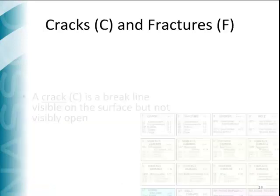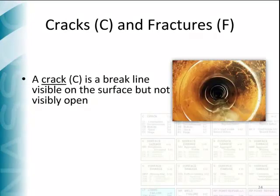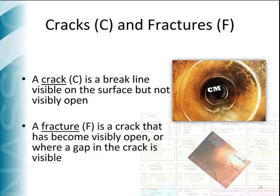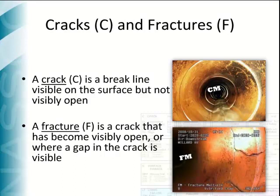A crack is represented by the letter C and describes a visible break line on the surface of the pipe, which will have pieces of the pipe still in place and not visibly open. A fracture is represented by the letter F and is an advanced stage of a crack where the pieces of the pipe are noticeably open.